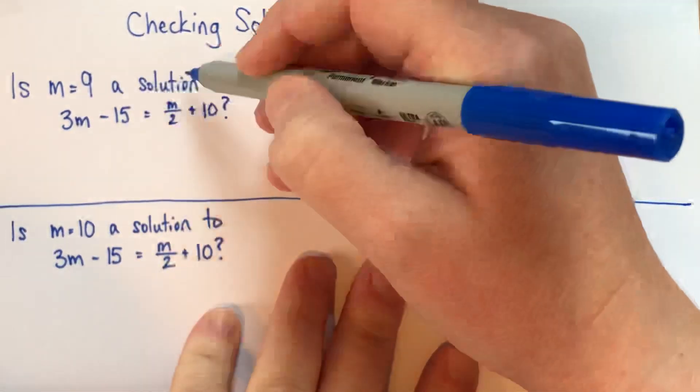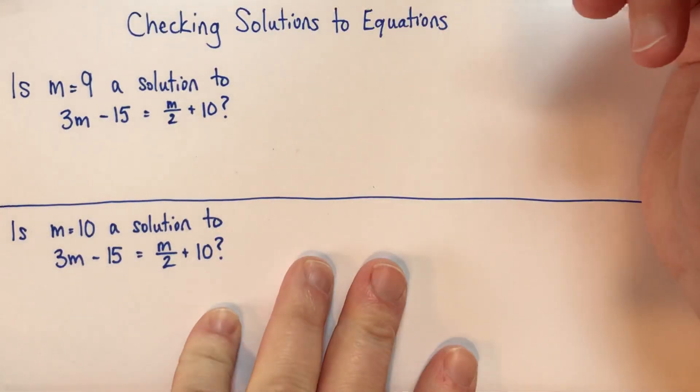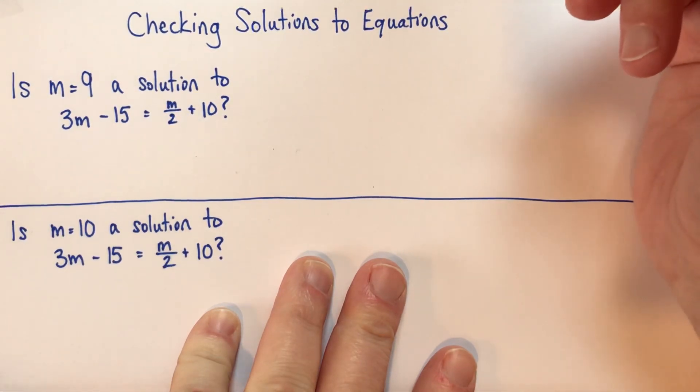Alright, so we're going to start. What I'm going to do first is I'm going to show you the way that people sometimes write it that, as a teacher, I really don't like. And I'll show you why. And then there's a very simple change you can make.